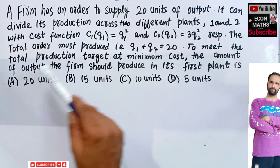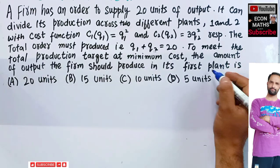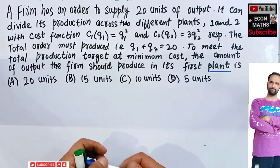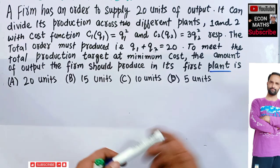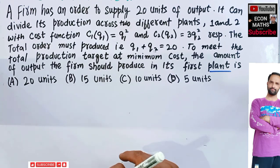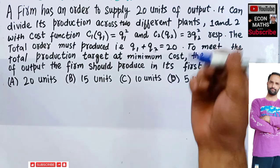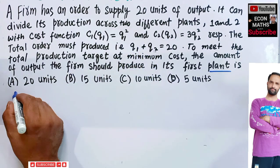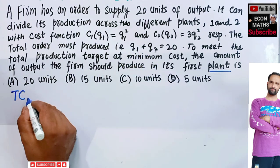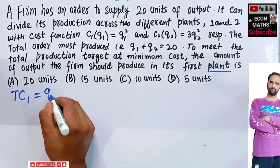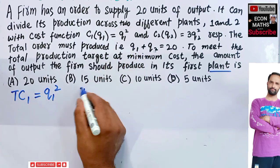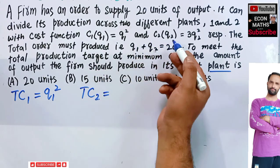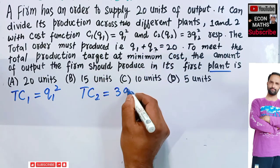We need to find out how much output the firm will produce in the first plant to minimize its cost. The total cost function of the firm in Plant 1 is equal to Q1 squared, and the total cost of the firm in Plant 2 is equal to 3Q2 squared.